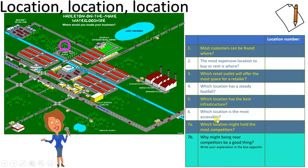Question 7a: which location might hold the most competitors? Look at where competitors are concentrated and put the number on the right. Question 7b: why might being near competitors be a good thing? Write your explanation in the box — this was touched on in the last slide, so review it in terms of the town and think about what competitors could offer a retailer.